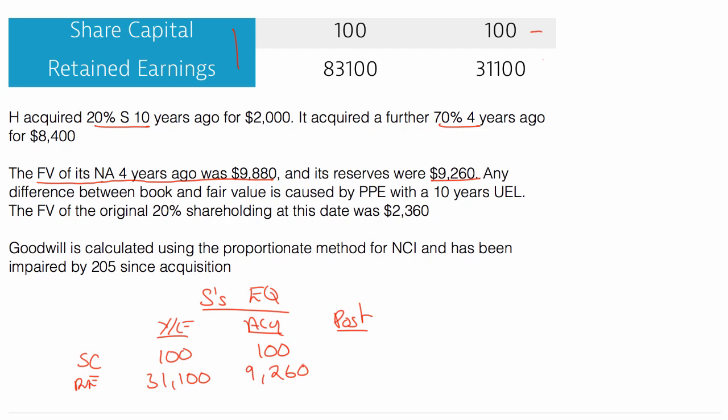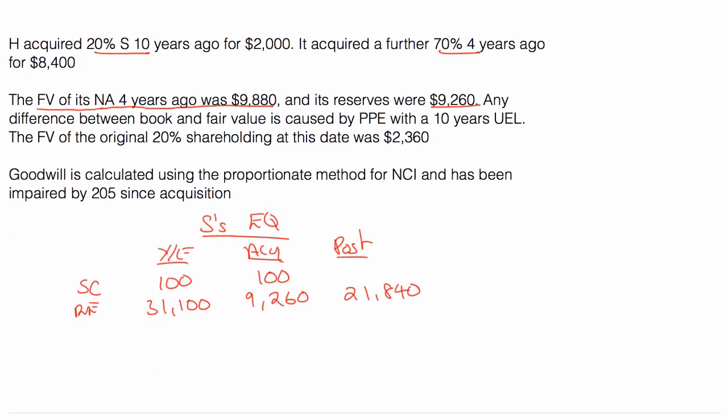The post-acquisition is the difference between that, which is 21,840. My next step is to add these two together, 9360. And that's the book value of the equity in the assets at acquisition. I want the fair value. I want the fair value, and that's 9880. So I need to do a fair value adjustment of 520. I need to know what caused it.